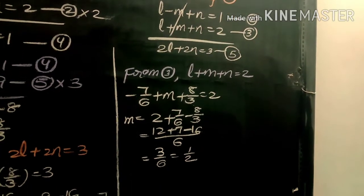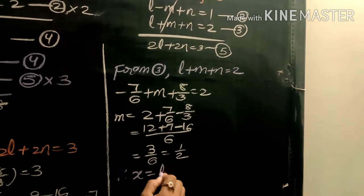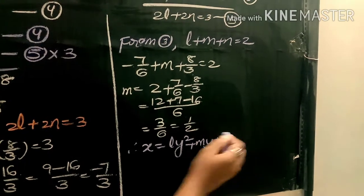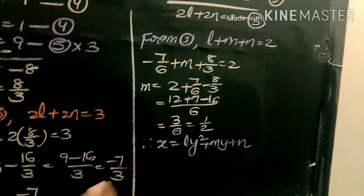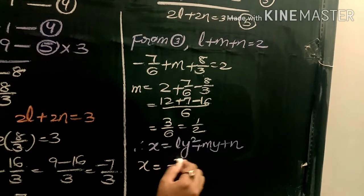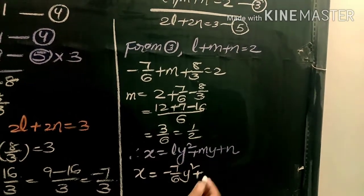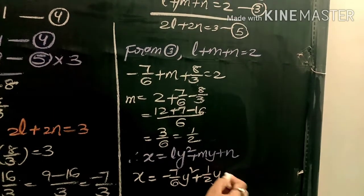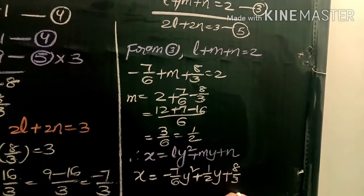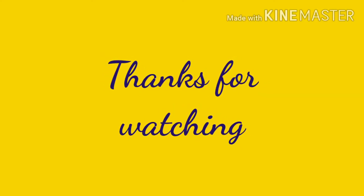Substituting the values l = −7/6, m = 1/2, and n = 8/3 back into the equation x = ly² + my + n, the required equation of the parabola is x = (−7/6)y² + (1/2)y + 8/3. This is the required answer.